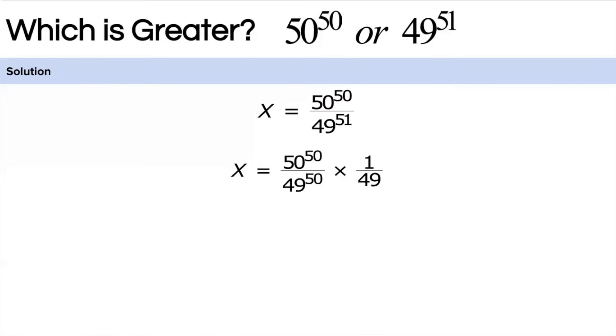Now let's write this 50 as (1 plus 49) divided by 49, raised to the power 50. We can write this term, right? Multiplied by the original 1 over 49. Here what we have done is split 50 into 1 plus 49, nothing else.